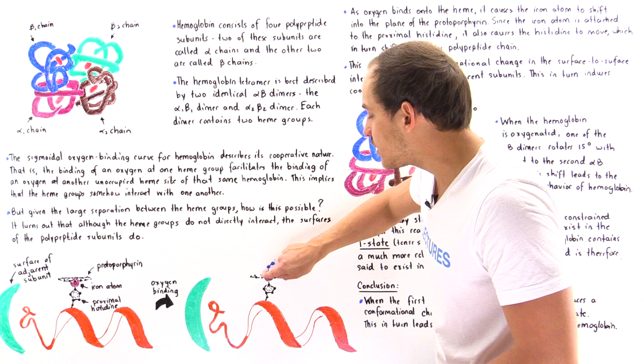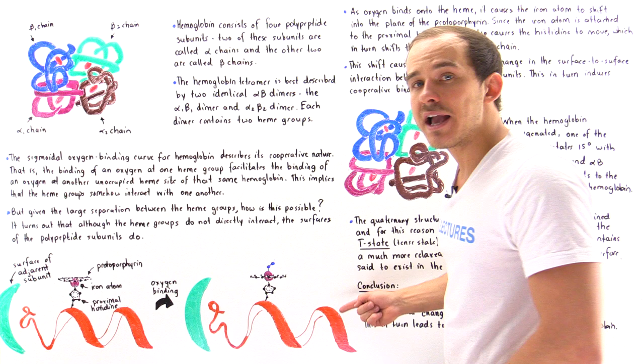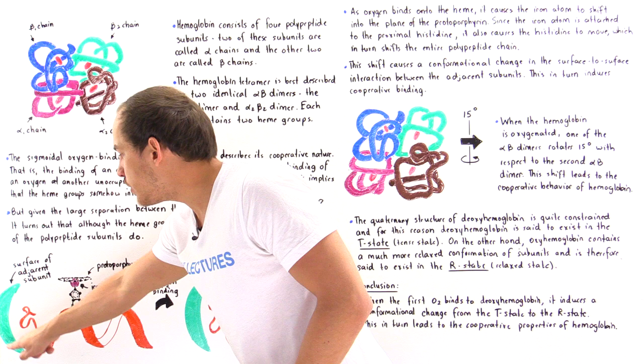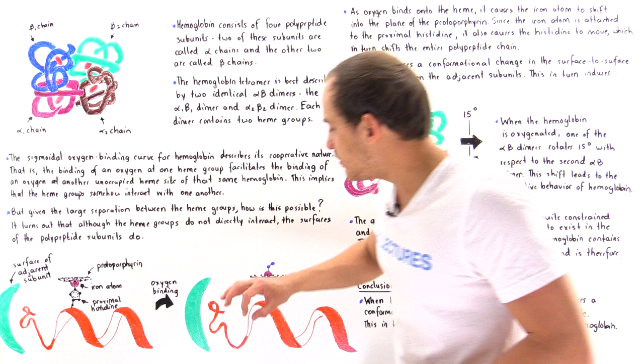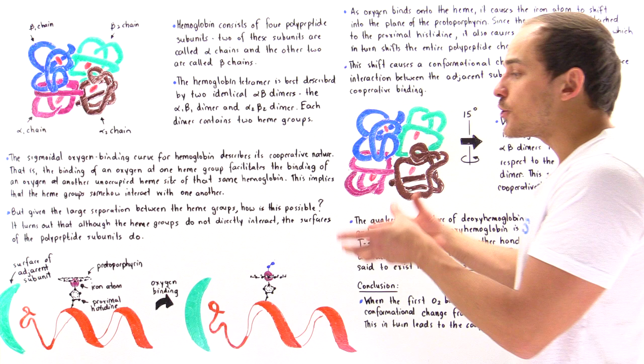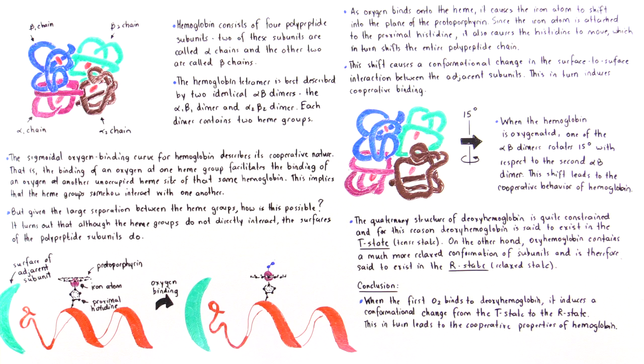Because the iron atom is attached to the proximal histidine, pulling the iron into the protoporphyrin plane also pulls on that proximal histidine. This in turn pulls on the entire alpha helix of that polypeptide chain. When binding takes place, there is a change in the surface-to-surface interaction between the two adjacent polypeptide chains — the distance between them changes, altering the electrostatic interaction. It is this surface-to-surface interaction change that causes the cooperative behavior between the different polypeptide chains and the different heme groups.